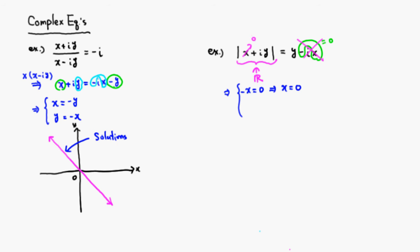So what we get is: the left-hand side is |iy|, which is the square root of y², which is the same as |y|, and the right-hand side is just y. Since the absolute value is never negative, we need y ≥ 0. If y is non-negative, then |y| equals y, so that condition is satisfied.